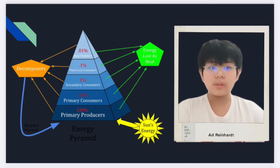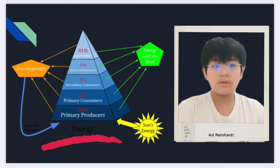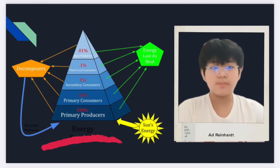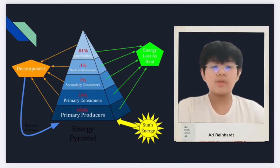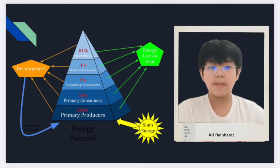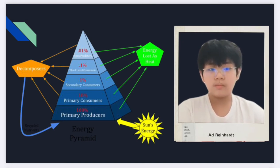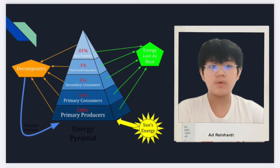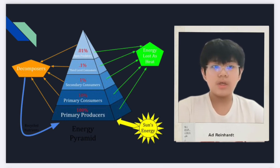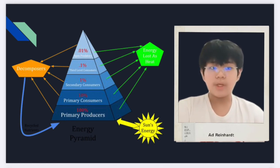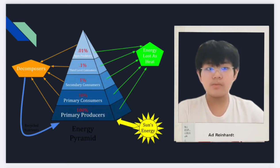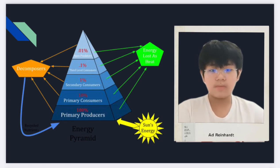Energy flows from the bottom of the pyramid, where we have the producers, upwards. The height of the bars is normally the same; however, each bar has a different width depending on the quantity of the element being measured. The energy pyramid is useful in quantifying energy transferred from one organism to another along the food chain. Energy is higher at the bottom part of the pyramid, but it decreases as you move up through the trophic levels.